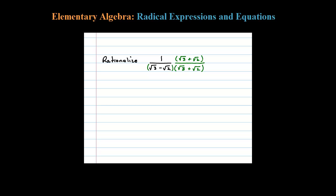Now watch what happens when you do this. In the numerator you're going to be left with square root of 3 plus the square root of 2. In the denominator you gotta distribute, so square root of 3 times square root of 3 is square root of 9.